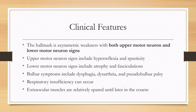Bulbar symptoms are fairly common and can include dysphagia, dysarthria, and pseudobulbar palsy. Respiratory insufficiency can also occur as the disease progresses, but sometimes it can also be the presenting symptom. One thing to note is that the extraocular muscles are typically spared until much later in the course of the disease, and if you see extraocular muscles being affected, you might think about other diseases such as myasthenia gravis.